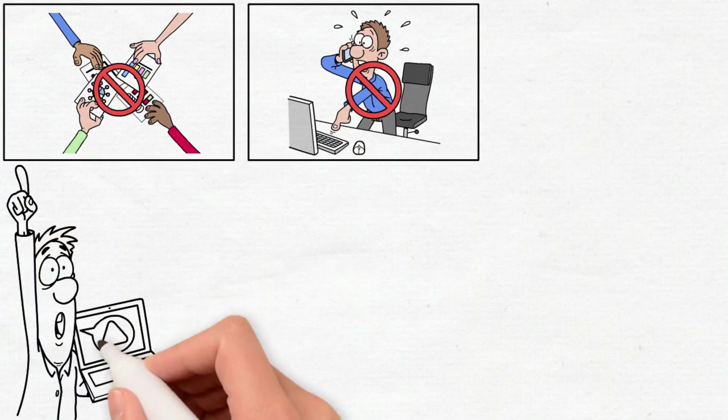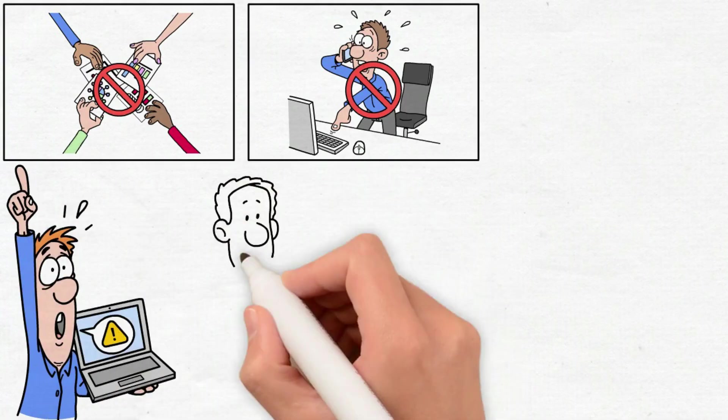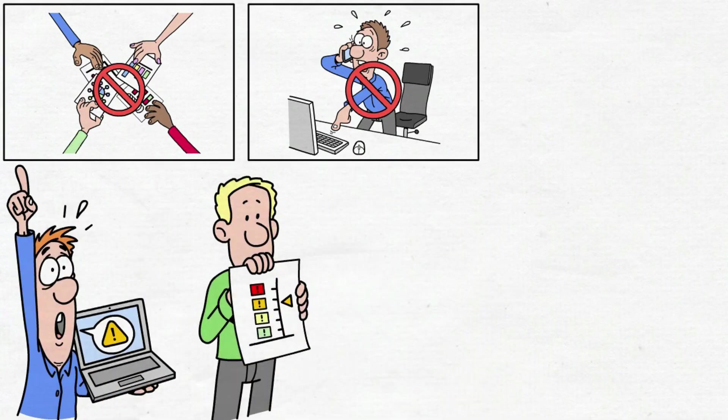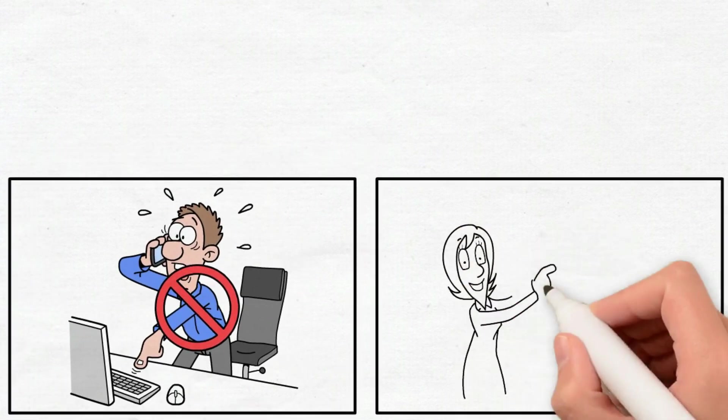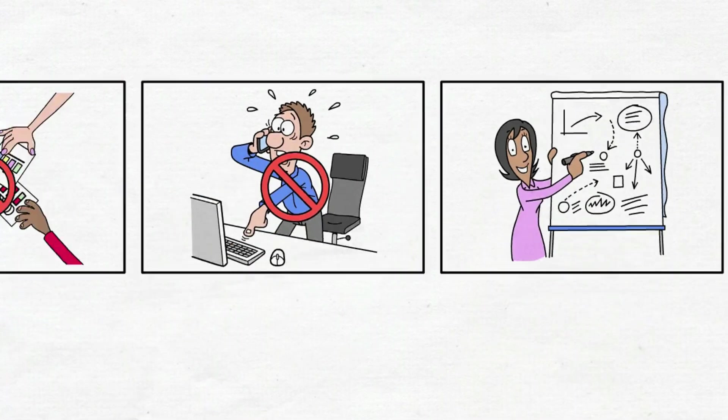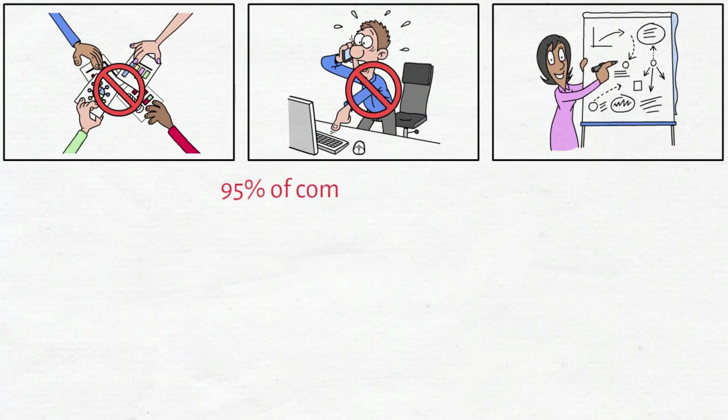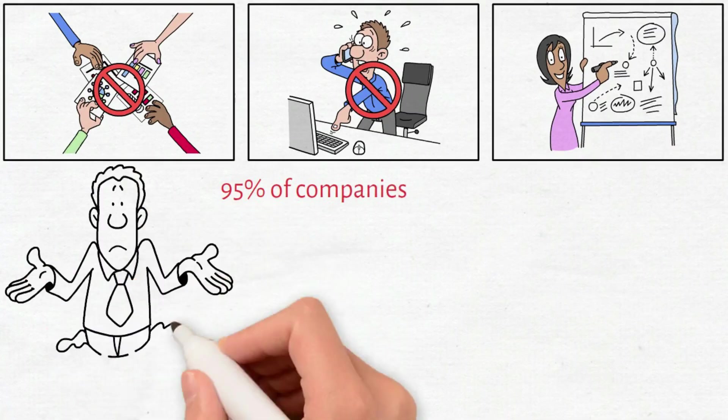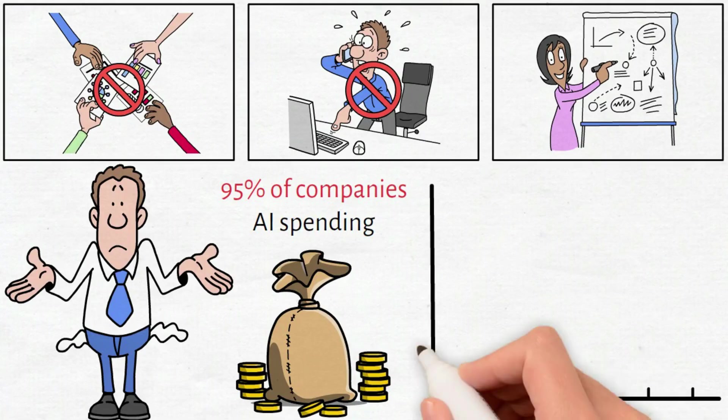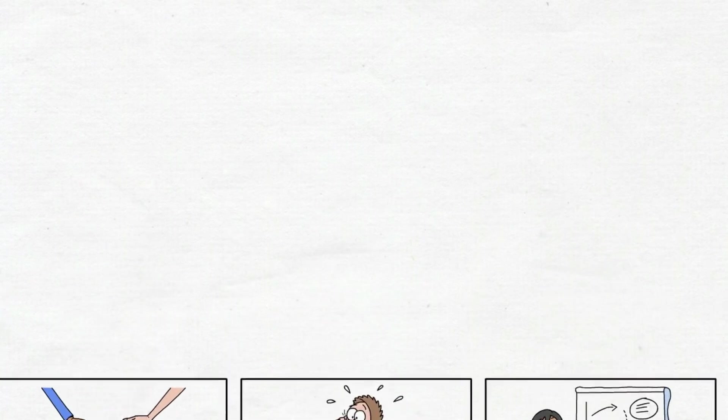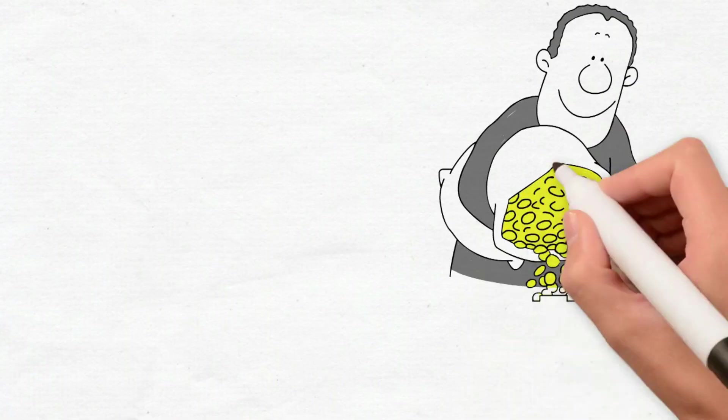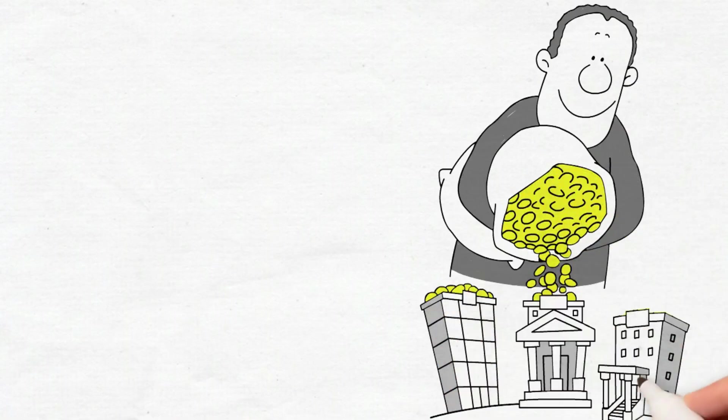Major financial institutions are issuing warnings. Bank executives predict higher crash probability than markets reflect. Central banks flag excessive valuations. Analysis reveals that 95% of companies earn zero return from tens of billions in AI spending. When massive investment produces nothing, corrections inevitably follow. But corrections are precisely where income investors construct generational wealth.